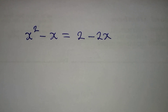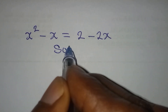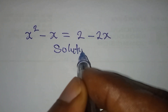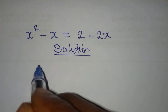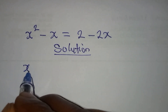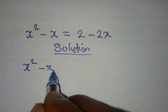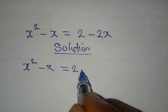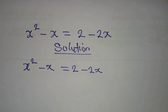Hello everyone, let's provide a solution to this problem very quickly. x squared minus x is equal to 2 minus 2x.